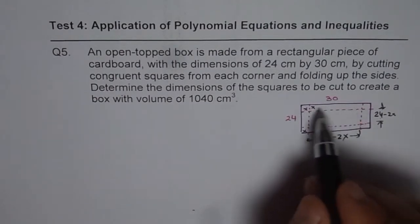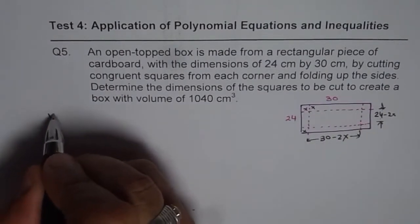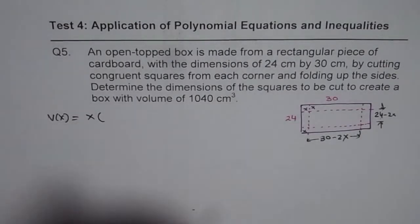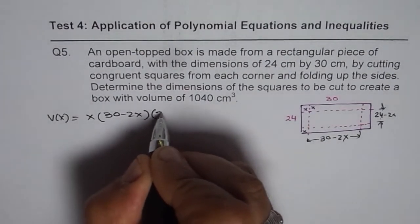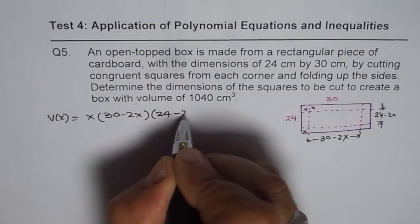And the height of this box is going to be x. So, the volume of the open top box can be written as x times, which is the height, length into width, which is 30 minus 2x times 24 minus 2x.